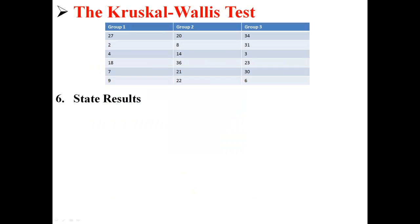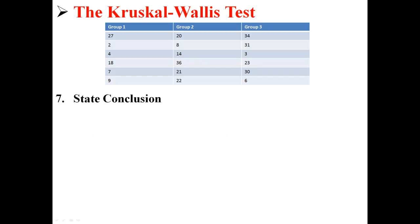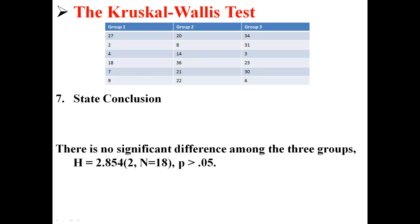Now we can move on to our results. Remember, our decision rule was: if our chi-square value is greater than 5.99, we reject the null hypothesis. In this case, our value is 2.854. Because it's not greater than 5.99, we do not reject the null hypothesis. Our conclusion is that there is no significant difference among the three groups that we compared in this Kruskal-Wallis test.